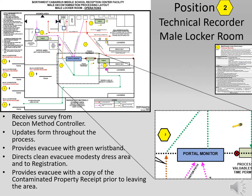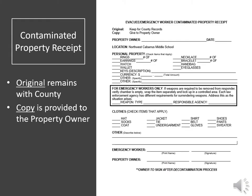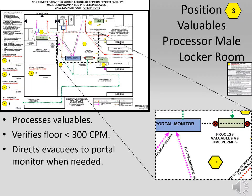The technical recorder position updates all documentation in this area. Once the evacuee has been verified clean by the portal monitor, a green wristband is provided. This position also provides a receipt for clothing and valuables removed during decontamination. Clothing will not be returned to the evacuee due to resource and equipment constraints. This position operates in the clean area with surgeon's gloves if warranted and uses group dosimetry for exposure updates. The valuables processor position is dedicated to processing valuables using decontamination techniques available at the table provided.